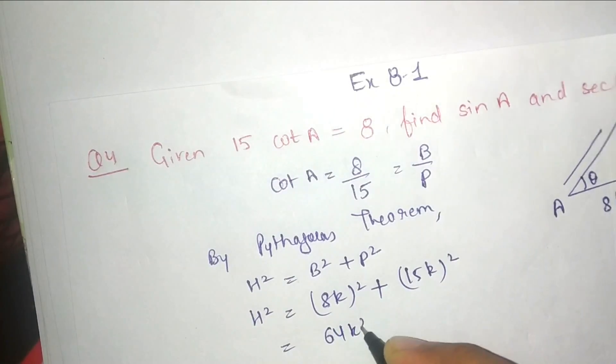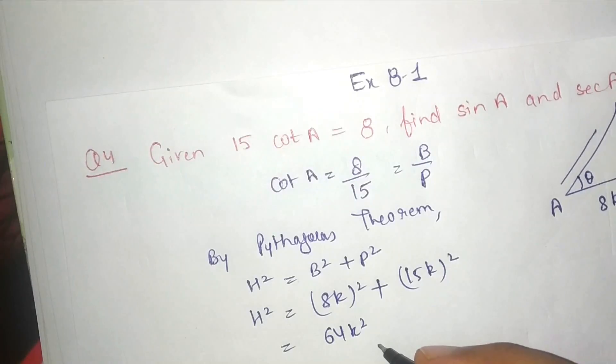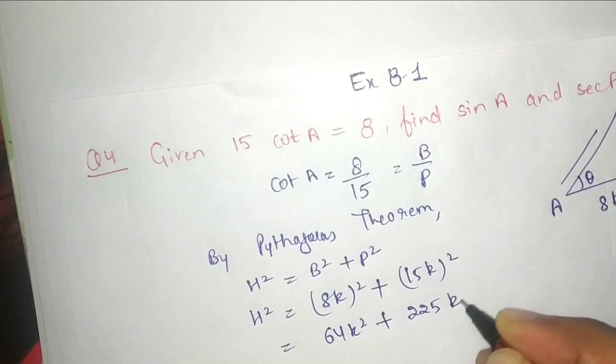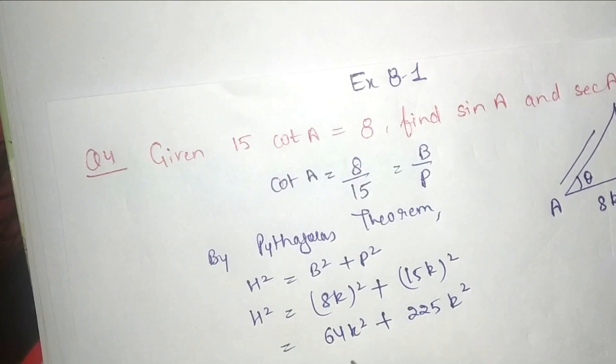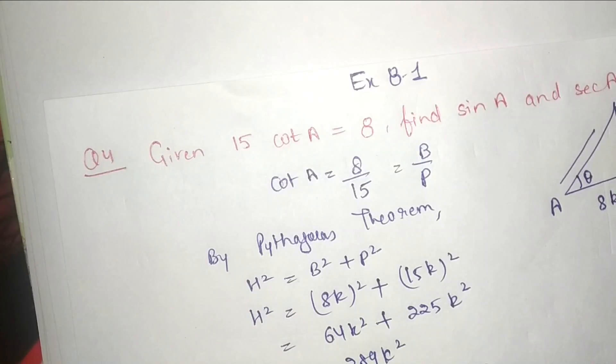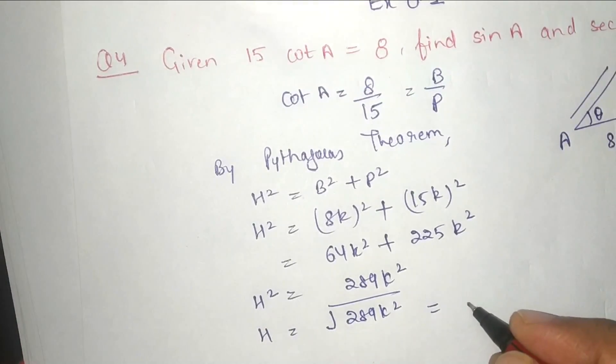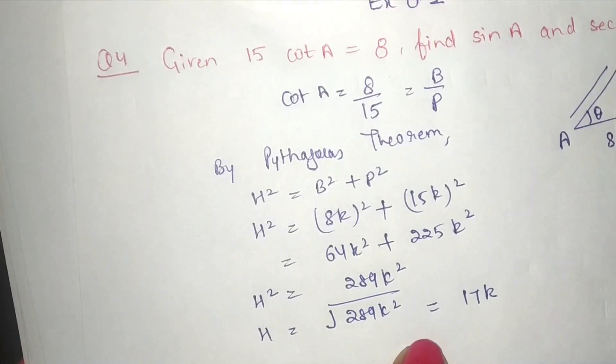Now 8 square is 64k square, 15k square is 225k square. So we will add, it will become 289k square. Here H square, H value find out, we will root 289k square. So 289 is 17k square. So here the value of H is 17k.